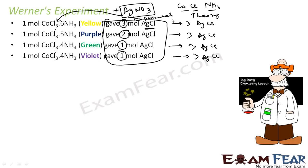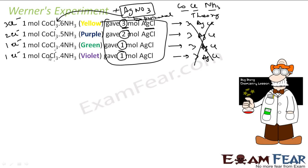This experimental data showed that the original theory had something wrong — the bonding had not been visualized properly. If a compound gives three moles of AgCl, all three Cl⁻ are free. If it gives two moles, only two Cl⁻ are free and one remains bonded to cobalt. If it gives one mole, only one Cl⁻ is free and two chloride ions remain bonded to cobalt.